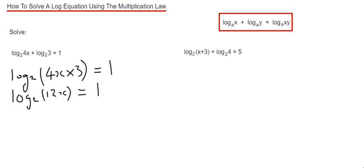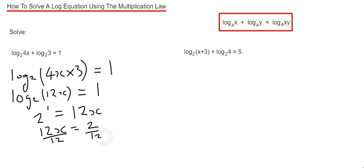We can now rewrite this logarithm in exponential form by writing it as 2 to the power 1 equals 12x. So 2 to the power 1 is 2, so we get 12x equals 2. And if we divide both sides by 12, that gives us x equals 2 twelfths, which is the same as 1 sixth.